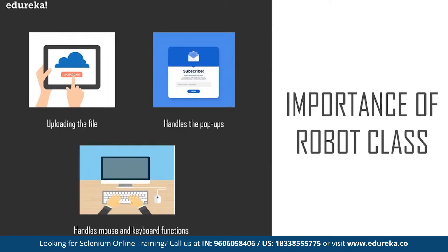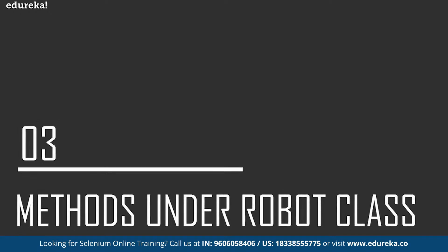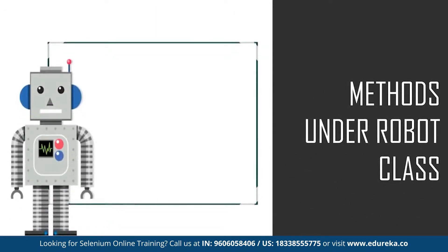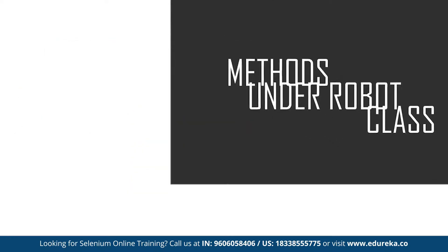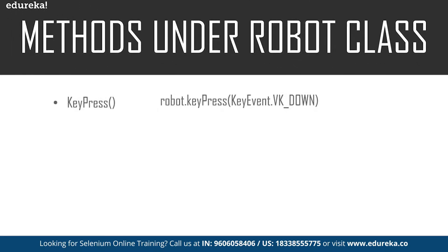Now let's move on to our next topic — the different methods used while working with this robot class. There are basically five different methods. It handles all keyboard and mouse functions. The first method is the key press method, which is used to press any key on the keyboard. For example, if you have this particular command, it will press the up key on the keyboard.